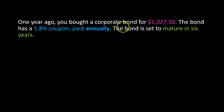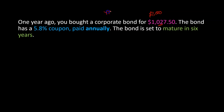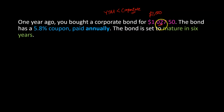Suppose one year ago you bought a corporate bond for $1,027.50. Quick concept check: the par value of a bond is typically $1,000. If you paid $1,027.50, that means the yield to maturity at the time you bought it was less than the coupon rate — the bond was offering more than you required, so you were willing to pay above face value.